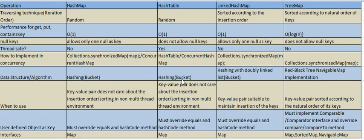If you want performance and do not require sorting or insertion order, then you can choose either HashMap or HashTable. Regarding null keys: HashMap allows only one null as a key. HashTable does not allow null keys. LinkedHashMap allows only one null as a key. TreeMap does not allow null keys.